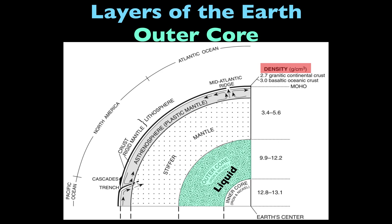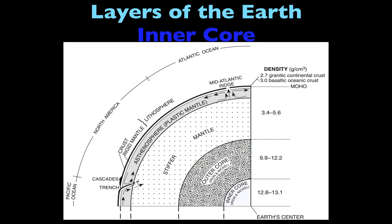The density of the outer core can be anywhere from 9.9 to 12.2 grams per centimeter cubed. Finally, the innermost layer is the inner core, which also contains iron and nickel, but this layer is solid iron and nickel, and it has the greatest density of anywhere from 12.8 to 13.1 grams per centimeter cubed.